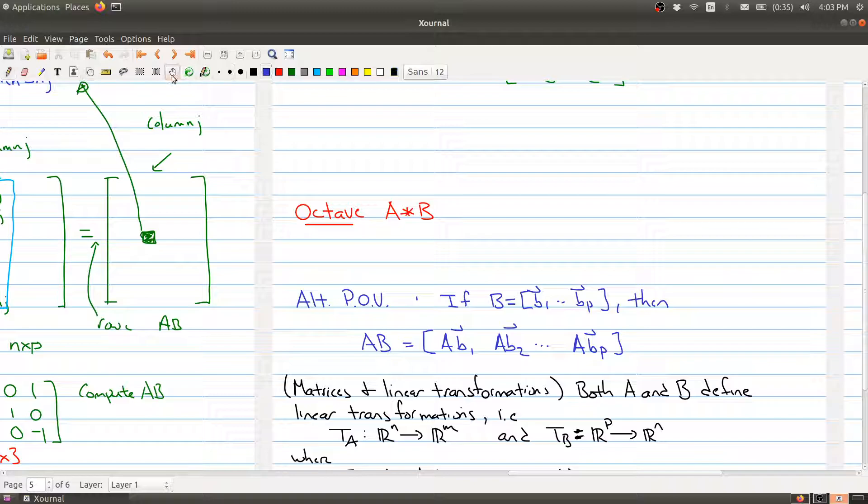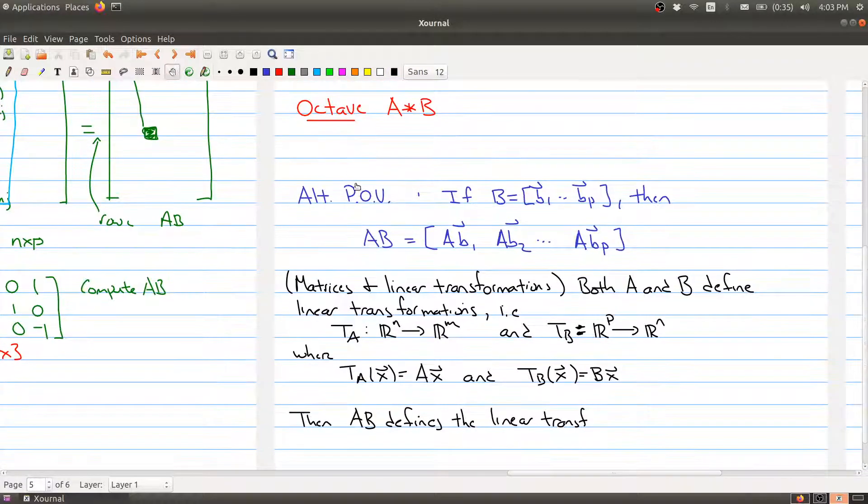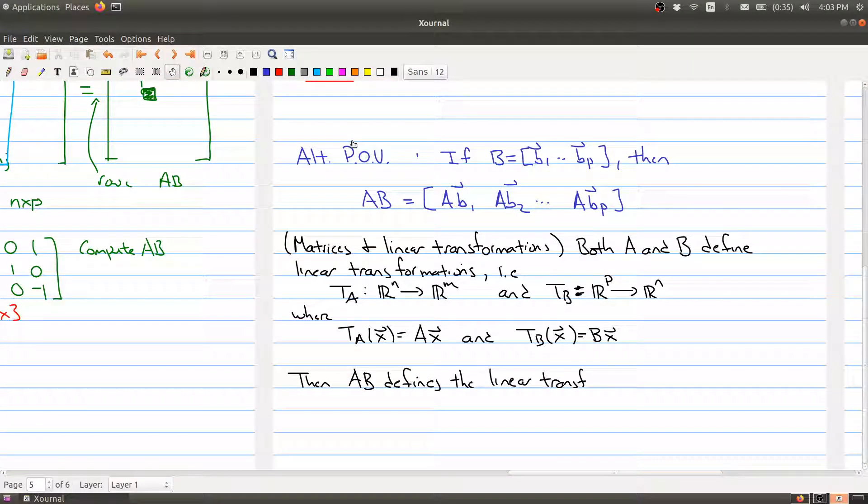Now, the other thing that we saw in chapter one is that matrices and linear transformations are linked. So whenever you have a matrix, you have a linear transformation. And whenever you have a linear transformation, you have a matrix. So what is happening in terms of matrix multiplication? What's the connection with linear transformations? So let's say that A and B are two matrices that you can multiply together. So that means the number of columns of this matrix is equal to the number of rows of this matrix.